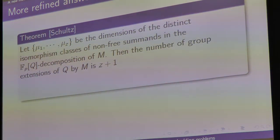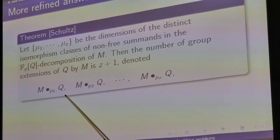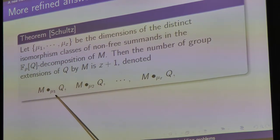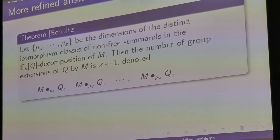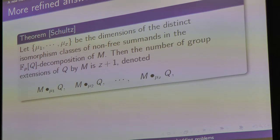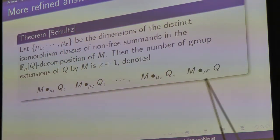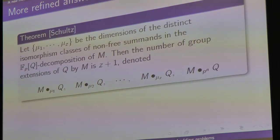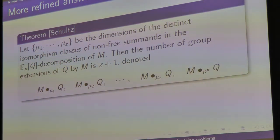It turns out the number of extensions of Q by M is exactly Z plus 1. I can actually write down generators and relations; the notation is supposed to remind you that this group is an extension of Q by M. These numbers underneath the bullet tell you how to write down generators and relations — the μ number is the central invariant that determines exactly what class you're in.